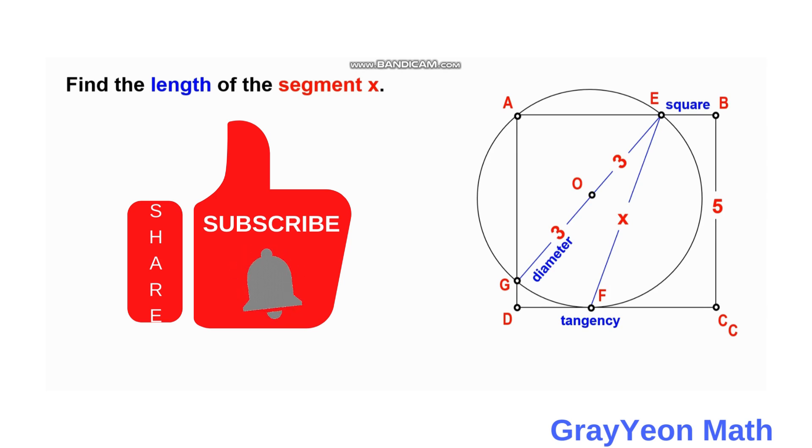It is overlapping this square ABCD and the diameter is drawn from G to E, of course passing through center O, which is 3 plus 3 units, 6 units in total for the diameter. So from point O to E is the radius, which is 3, and the square is actually 5 unit side length.